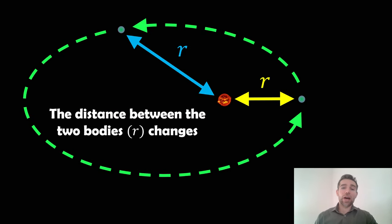We then have R, which is the instantaneous distance between the two objects. Here we've got the Earth or a planet orbiting the Sun or a star, and R is that distance between the two as it goes around. Because it's elliptical, R changes during the course of the orbit.